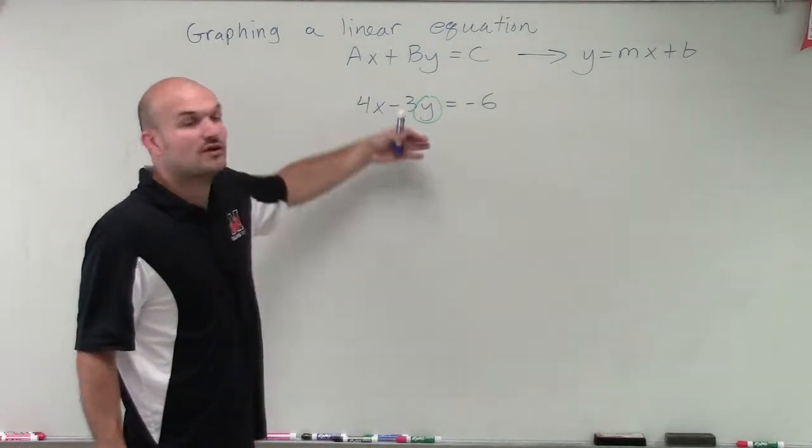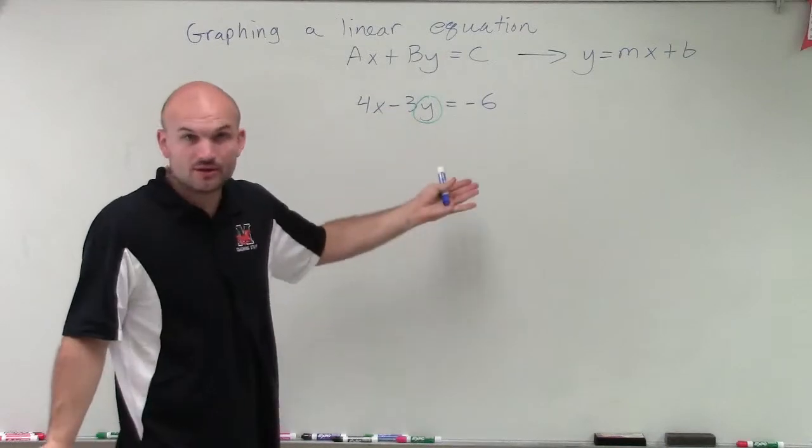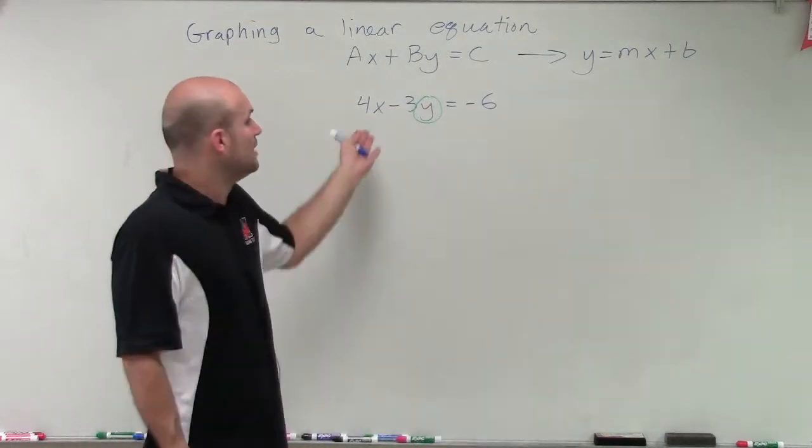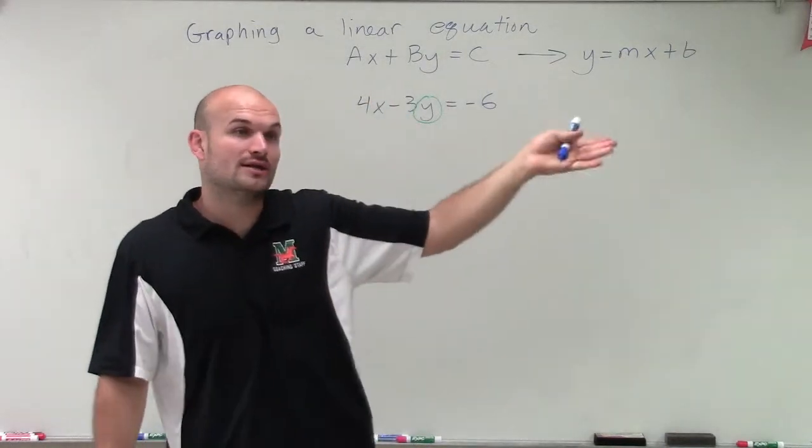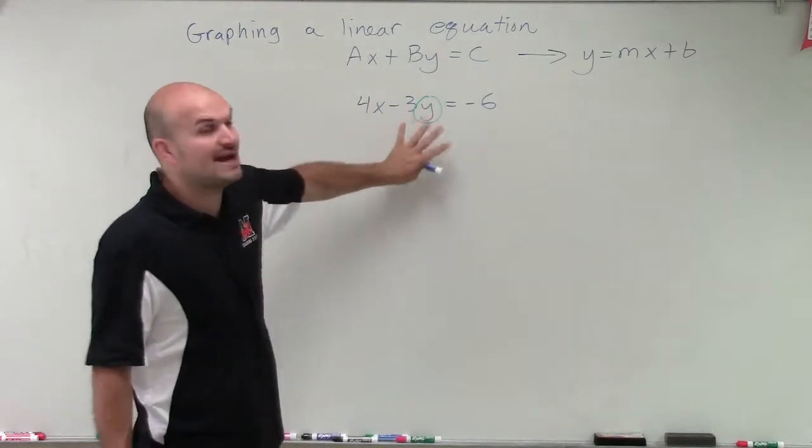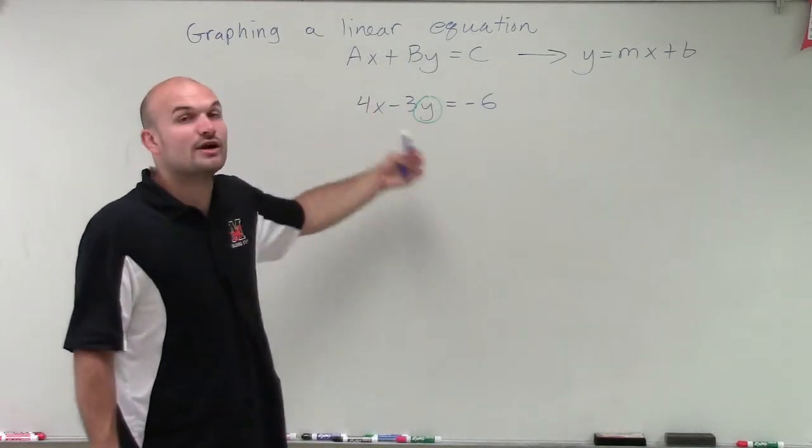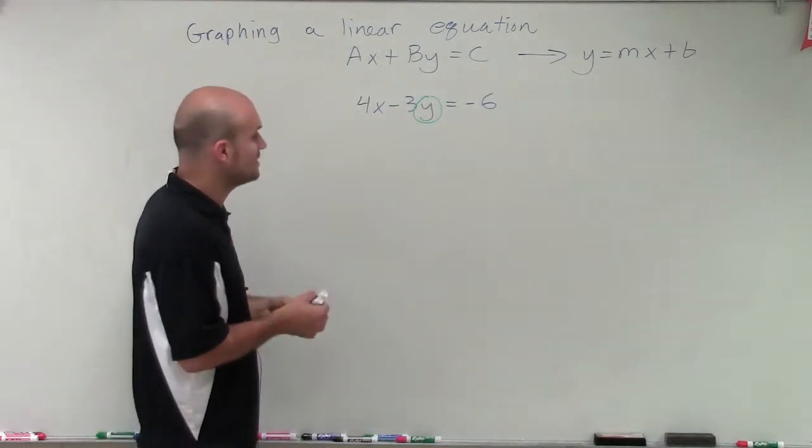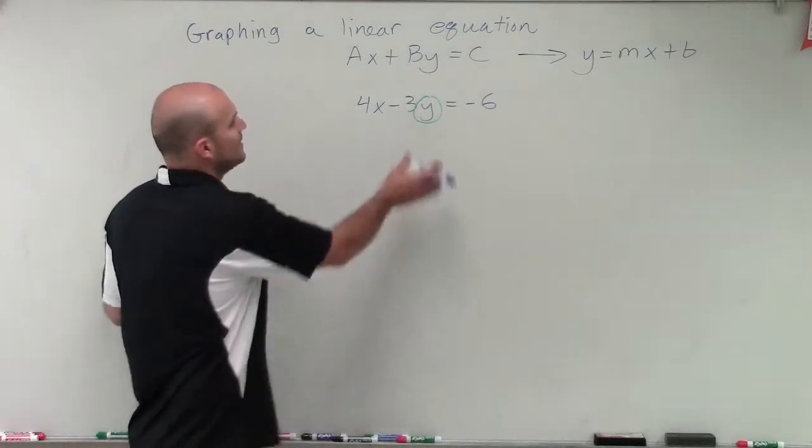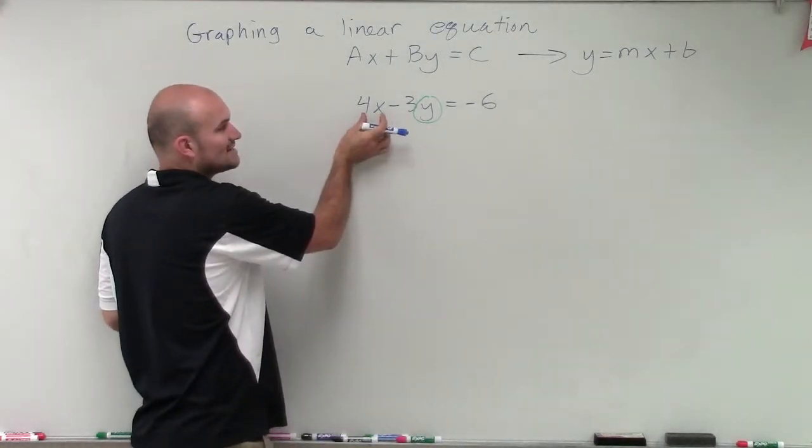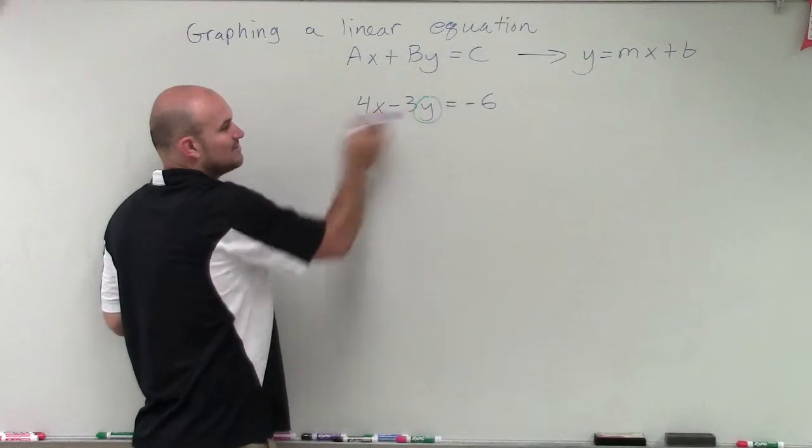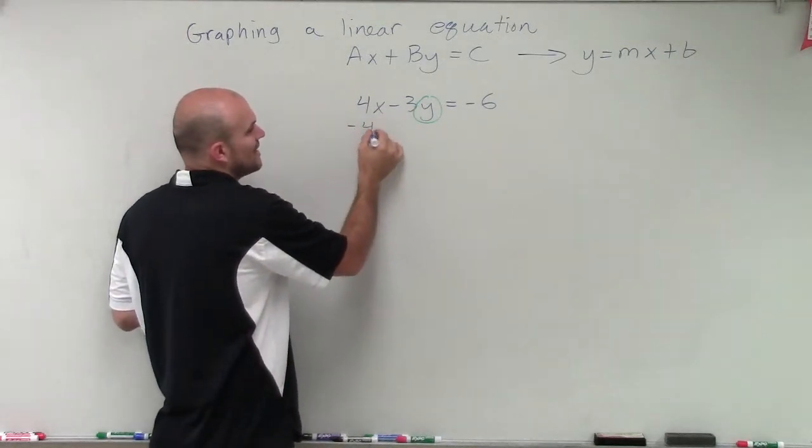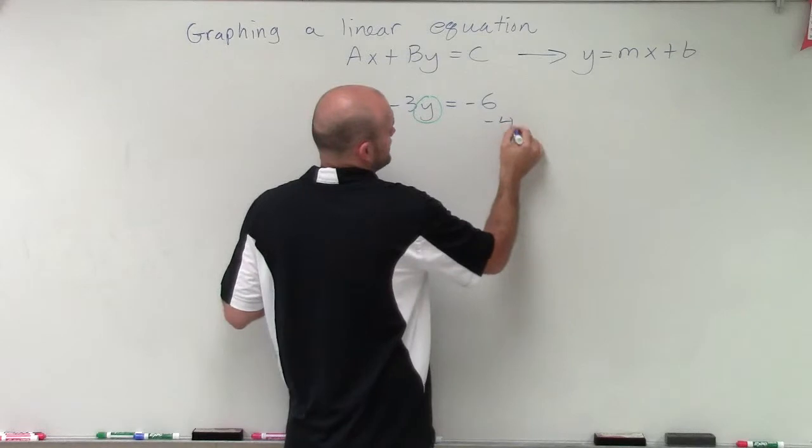So what we need to do is first, just like we were solving a two-step equation or any type of equation, this one has two variables in it, so we call it a literal. But just when we're solving any type of these, we need to use our inverse operations. And we always undo addition and subtraction first. Now, since this 4x is positive, it's being added to my y. So to undo addition of 4x, I need to subtract 4x.